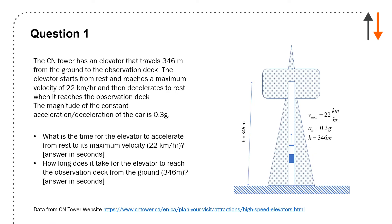Question 1: The CN Tower has an elevator that travels 346 meters from the ground to the observation deck. The elevator starts from rest, has a maximum velocity of 22 kilometers per hour, and decelerates to rest when it reaches the observation deck.